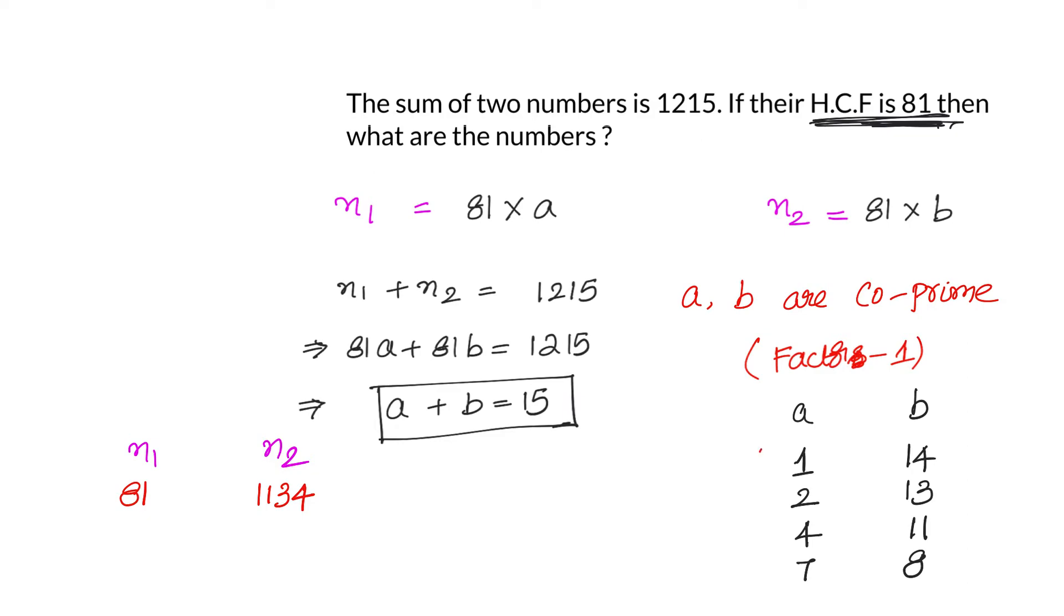If I take the second scenario a equals to 2, so 162, 81 into 13, 1053. If I go to the third scenario a is 4, 324, and b is 81 into 11, that is 891. If I go to the last scenario I have a equals to 7, 567, and b equals to 648.